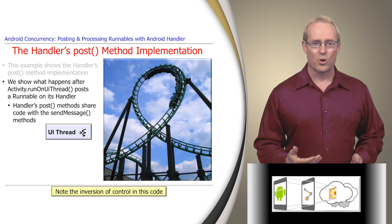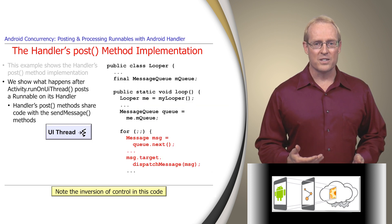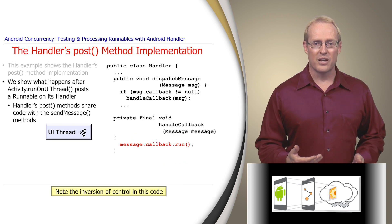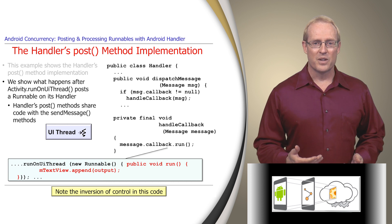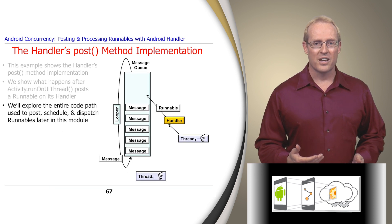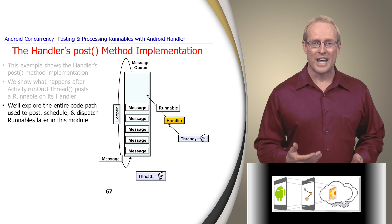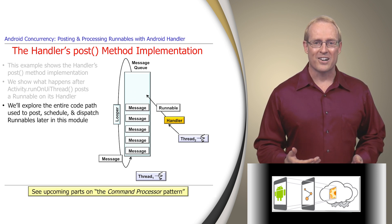Note the inversion of control on the path through this code. The looper runs the user interface thread's event loop, and encapsulated runnables are executed via the runHook methods provided by application developers. We'll explore the entire code path used by the Hammer framework to post, schedule, and dispatch runnables later in this module when we present the command processor pattern.